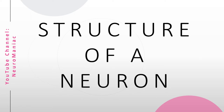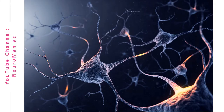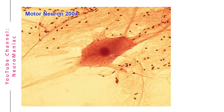Hey everyone, welcome back to my channel Neuromaniac, hope you're all doing well. Today we're going to be discussing the structure of a neuron. Have you ever seen a PC wallpaper like this? Is it something from outer space? Guess what — it's a group of neurons. These are cells that transmit electrical signals across the nervous system.